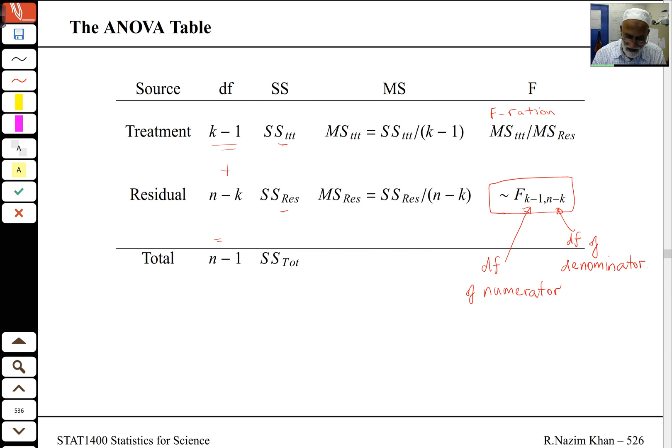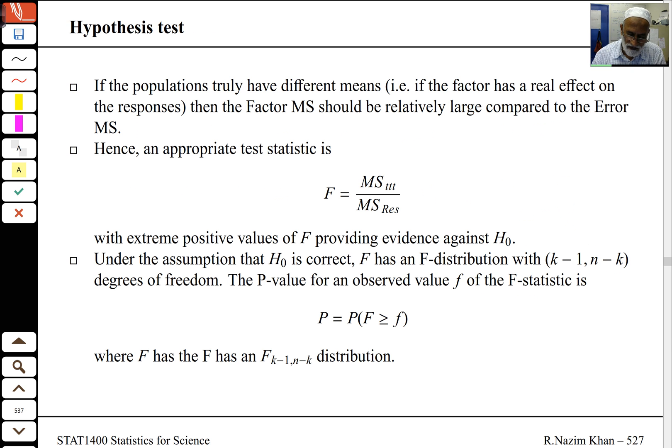If the populations truly have different means, then the difference between the group means and the grand mean will be large, and F will be large. So extreme positive values, because everything is positive here - these are all squares - would be evidence against the null hypothesis. I can find a p-value by looking at the F-distribution with degrees of freedom k-1, n-k, and I can do the hypothesis test in the usual way by comparing with some significance level.